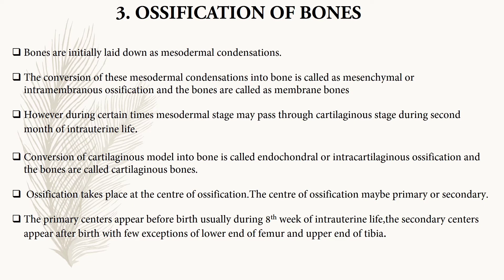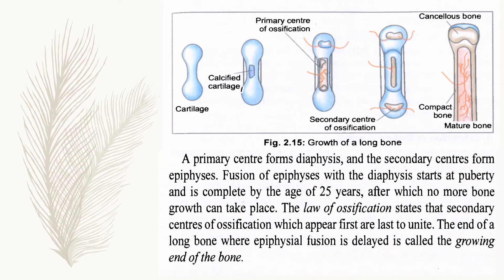The third question is ossification of bones. Bones are initially laid down as mesodermal condensations. Conversion of these condensations directly into bone is called intramembranous ossification, and these are called membrane bones. When the mesodermal stage passes through a cartilaginous stage during the second month of intrauterine life, the conversion of the cartilaginous model into bone is called endochondral ossification, and these are called cartilaginous bones. Ossification takes place at centers of ossification, which may be primary or secondary.